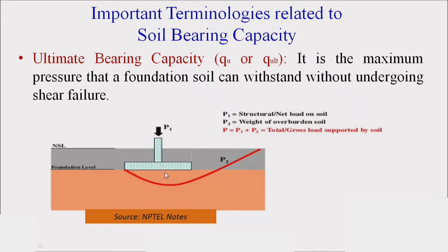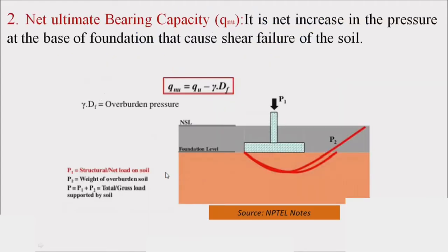The second definition is net ultimate bearing capacity. It is the increasing pressure at the base of the foundation that causes shear failure of the soil — i.e., which causes shear failure beneath the foundation. Therefore, q_nu = q_u minus gamma times D_f.